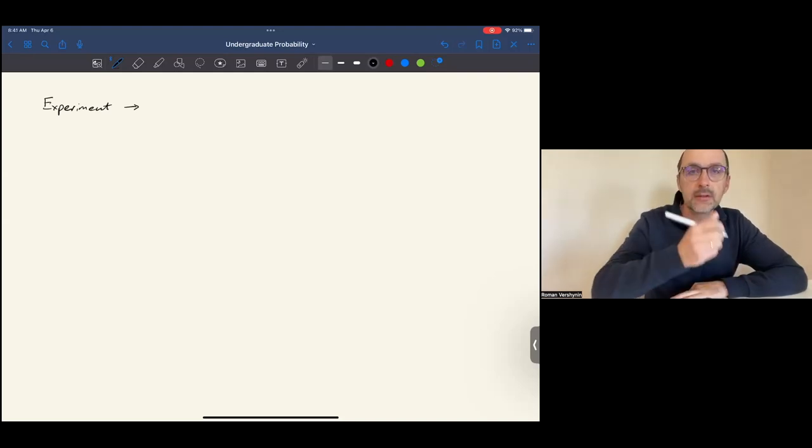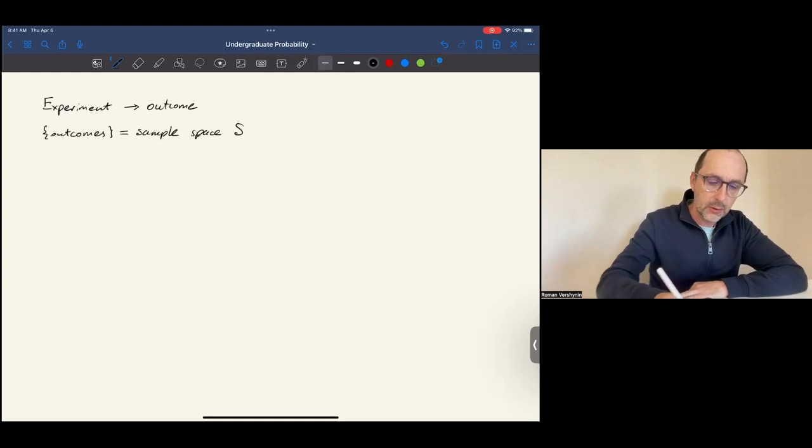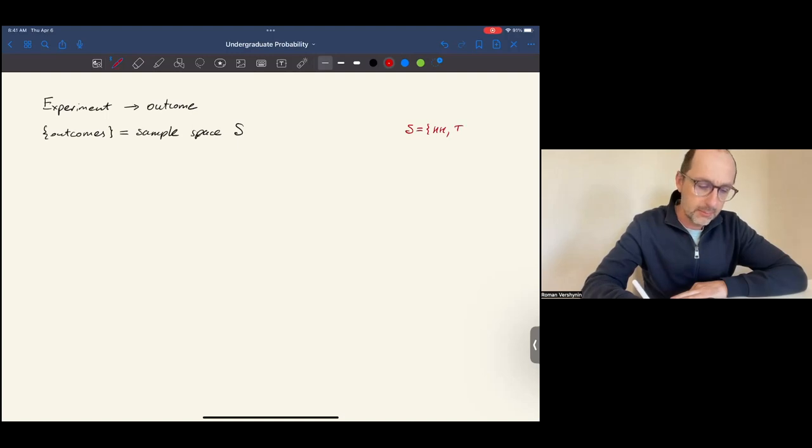An experiment may result in one or more possible outcomes. For instance, head-head or head-tail, and so on. The set of all possible outcomes, anything that can happen in this experiment, is called the sample space and is denoted capital S. In this experiment of flipping the coin twice, the sample space consists of four possible outcomes.